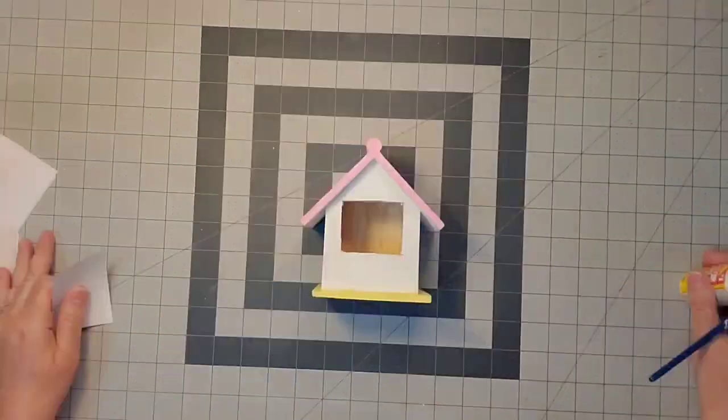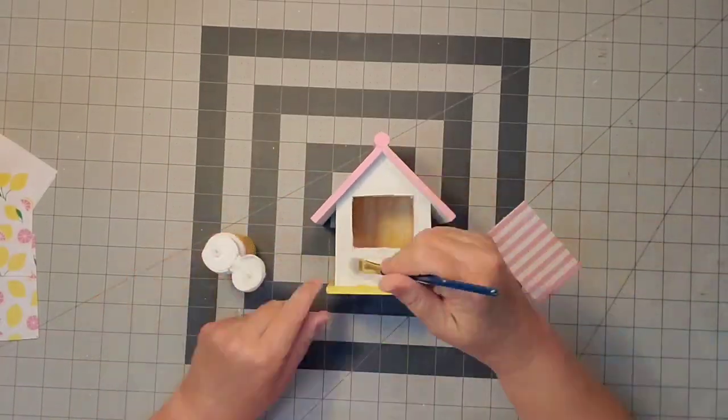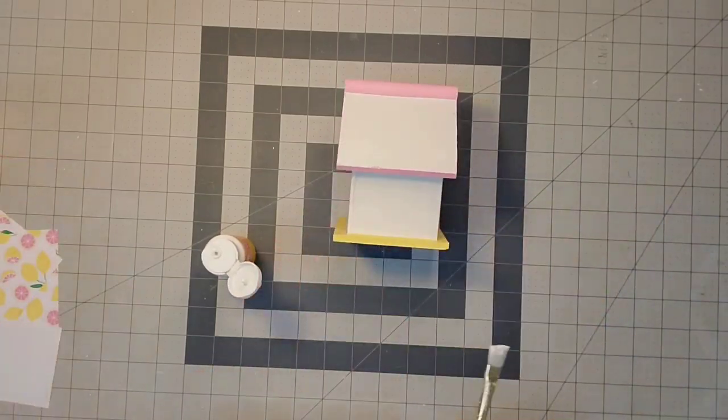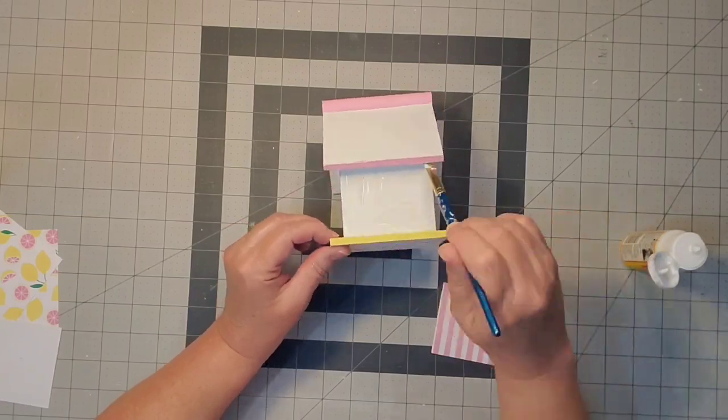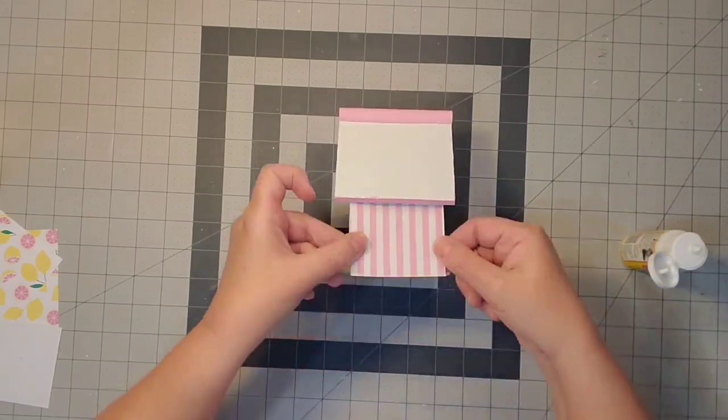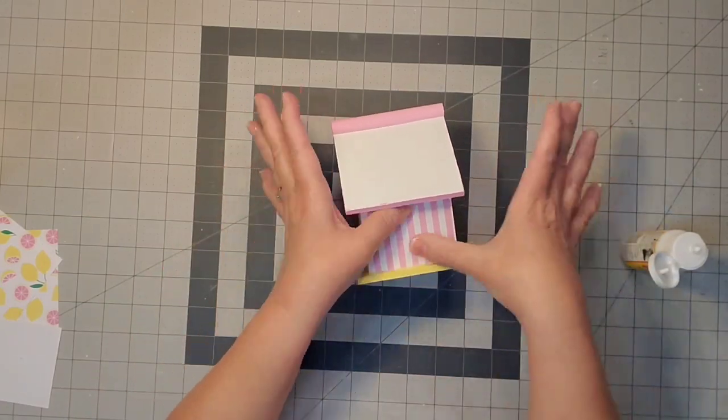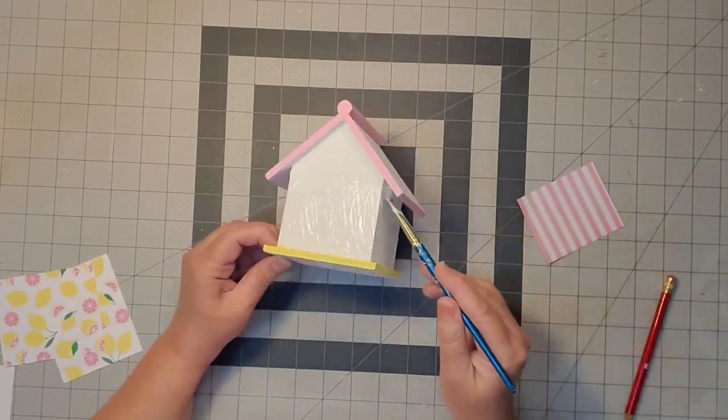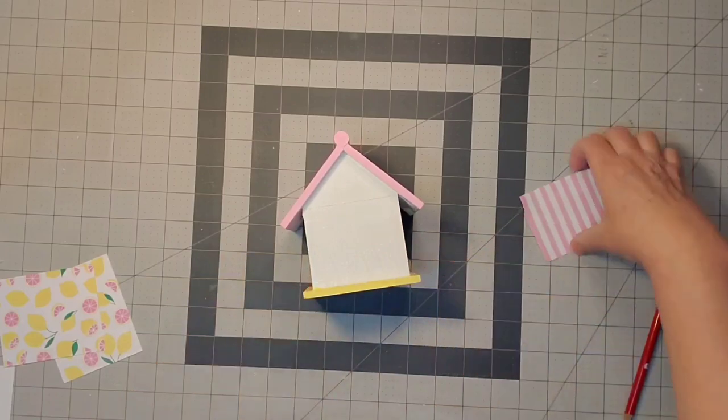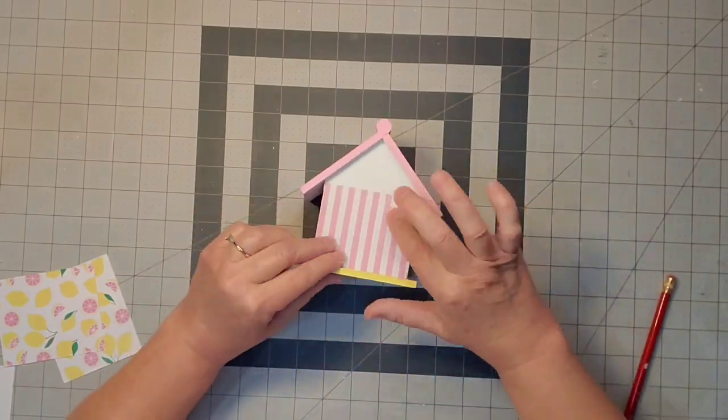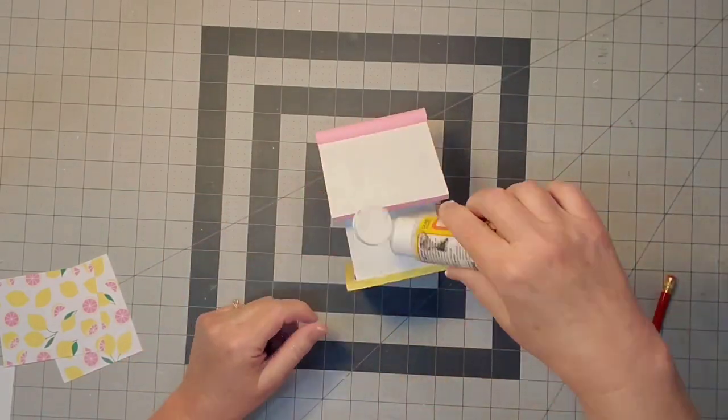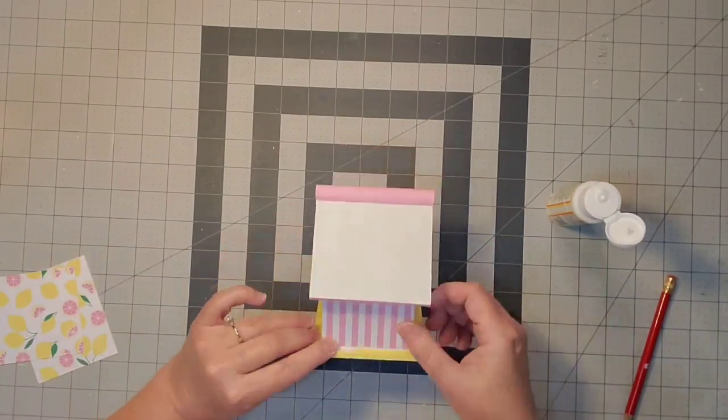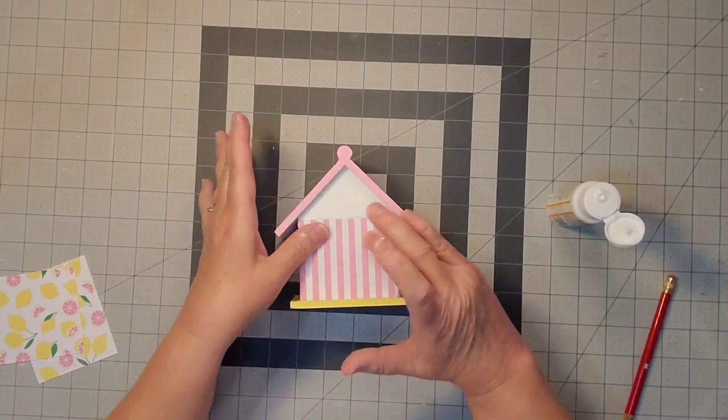For the front, back, and sides of my birdhouse, I cut pieces of scrapbook paper in the pink and white stripe, which is how our bar looked. I'm placing that down with Mod Podge all the way around. Once it's dried completely, I put another coat of Mod Podge on top.